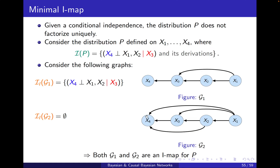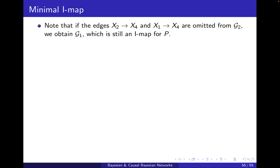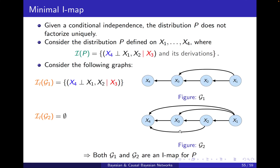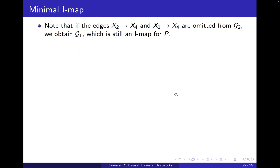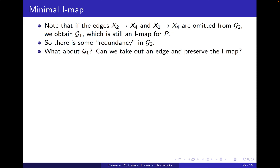Both of them are an IMAP, so it's not unique — IMAP does not provide a unique factorization. However, there is something specific about the second graph: it's more crowded. In particular, if I delete this edge, this link, and the above link, I will get exactly G1, which is still an IMAP for P. So there is some redundancy in that graph. But what about G1 — can we take out an edge and preserve the IMAP property?